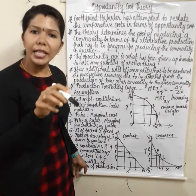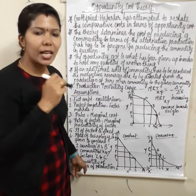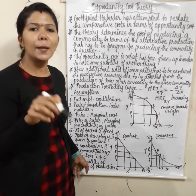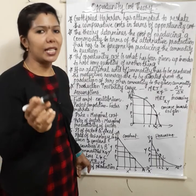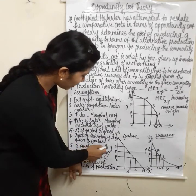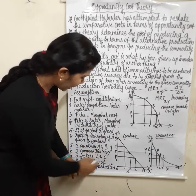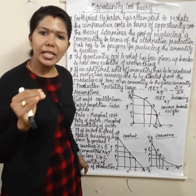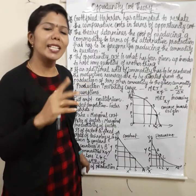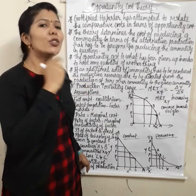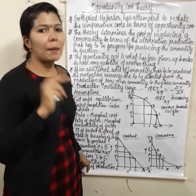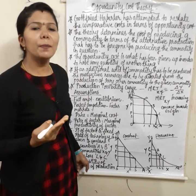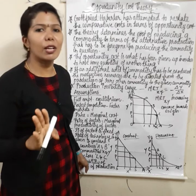Two countries, two commodities, two factors of production. The two factors are labor and capital. There are two countries, two factors — labor (L) and capital (C) — and two commodities, X and Y. To produce X, you sacrifice Y.